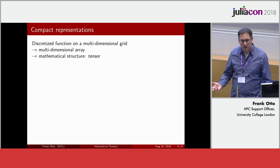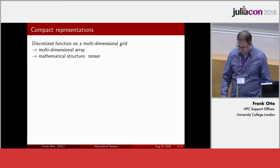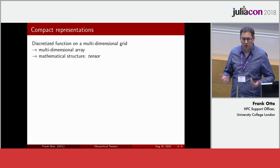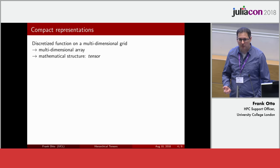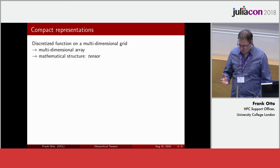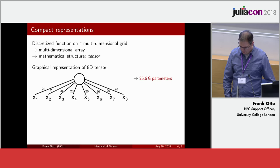We start with a function discretized onto a multidimensional grid — superficially that's just a multidimensional array, in our example an array with nine indices. But it actually has more mathematical structure: it's a tensor. A two-dimensional array is a matrix, and that's not just a grid of numbers — it has linear algebra structure which is very useful. The same is true for tensors, which have additional algebraic structure.